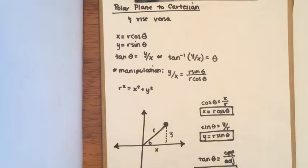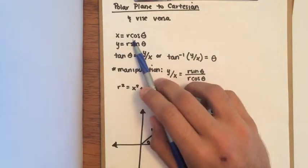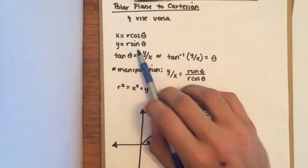There are four formulas you're going to be using, which I'm going to go through in a little bit. We have x equals r cosine θ, y equals r sine θ,